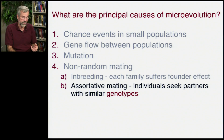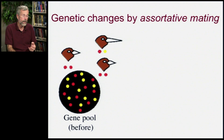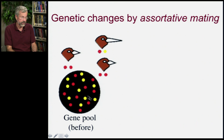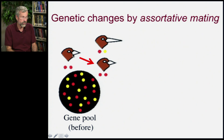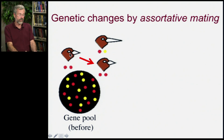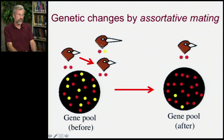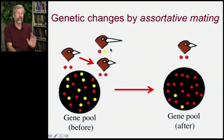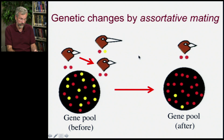The other form of non-random mating I want to discuss is called assortative mating, and this is where individuals seek partners with similar genotypes. Let's imagine we have a population of birds with two different alleles and several different genotypes. A short-beaked bird is put off by the long beak of another bird, and so it preferentially mates with its own kind. In the next generation, the individuals with the yellow beak were not able to mate, so their allele is much rarer — they've been excluded from the breeding pool.